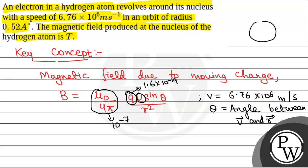So here, if the electron is moving in a circular orbit, then the velocity vector will be perpendicular to the radius vector. Therefore, theta will be equal to pi by 2.